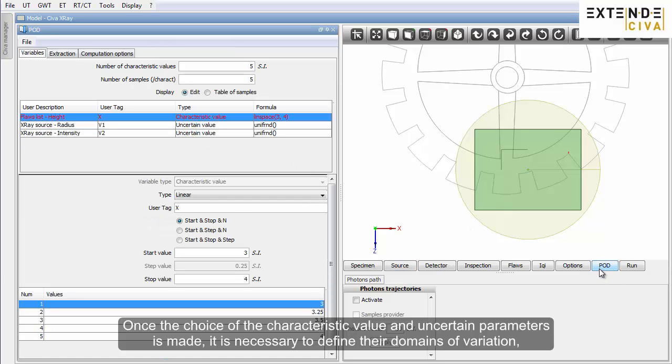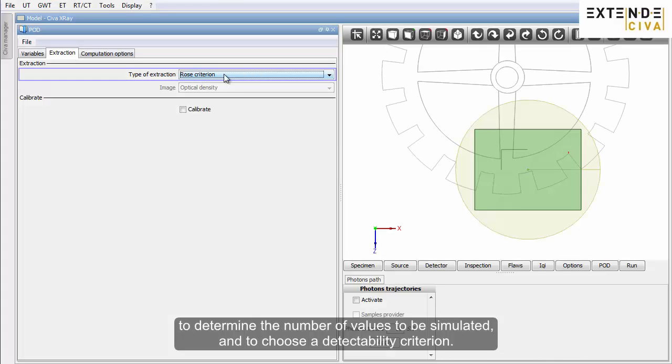Once the choice of the characteristic value and uncertain parameters is made, it is necessary to define their domains of variation, to determine the number of values to be simulated, and to choose a detectability criterion.